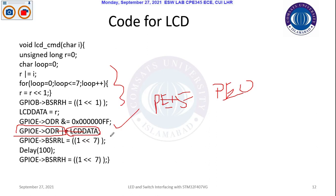Bitwise OR is going to add to this register. Whatever LCD data will be added to the ODR, it will also be mapped to the ODR register. In the LCD data, I have to shift that value to the upper half. This is the first 8 bits of LCD data in the 16-bit ODR register. The reason is that D0 is not connected to PE0 — it is connected to PE8 — so that's why I have to shift the data.